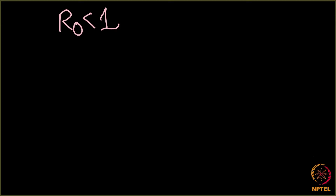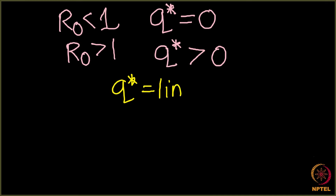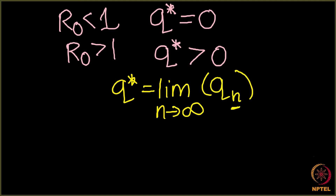In this lecture we start from where we left off. Our problem statement: if R0 is less than 1, we have to prove that q* equals 0, and if R0 is greater than 1, then q* is greater than 0. We know that q* is the limit as n tends to infinity of qn, where qn is the probability that the infection persists till the nth level — that is, at least one person at the nth level is infected.